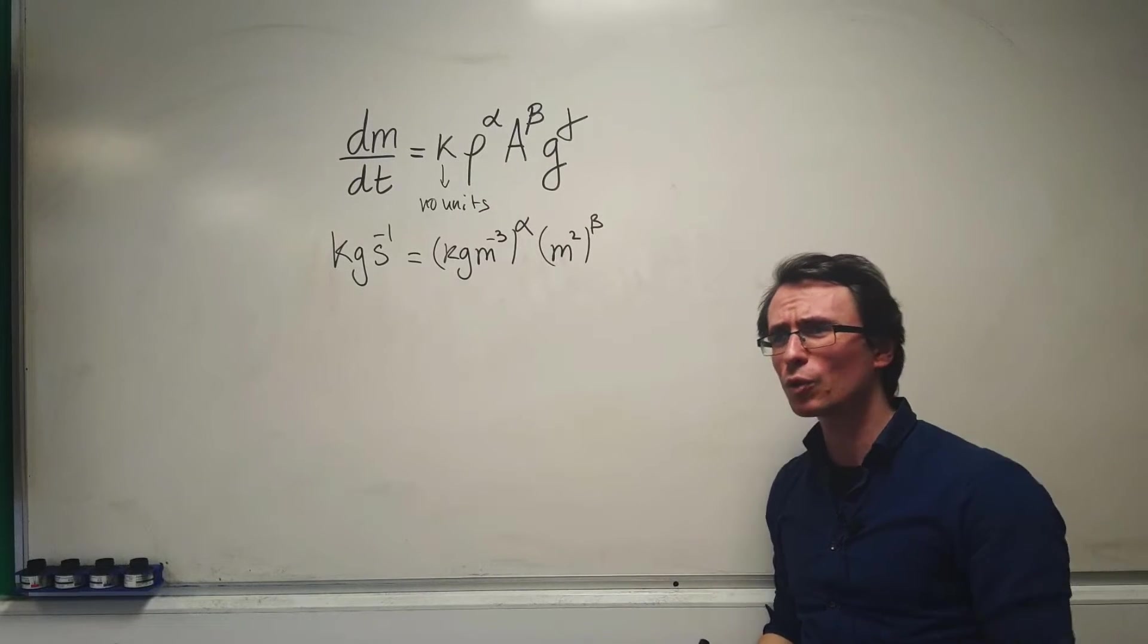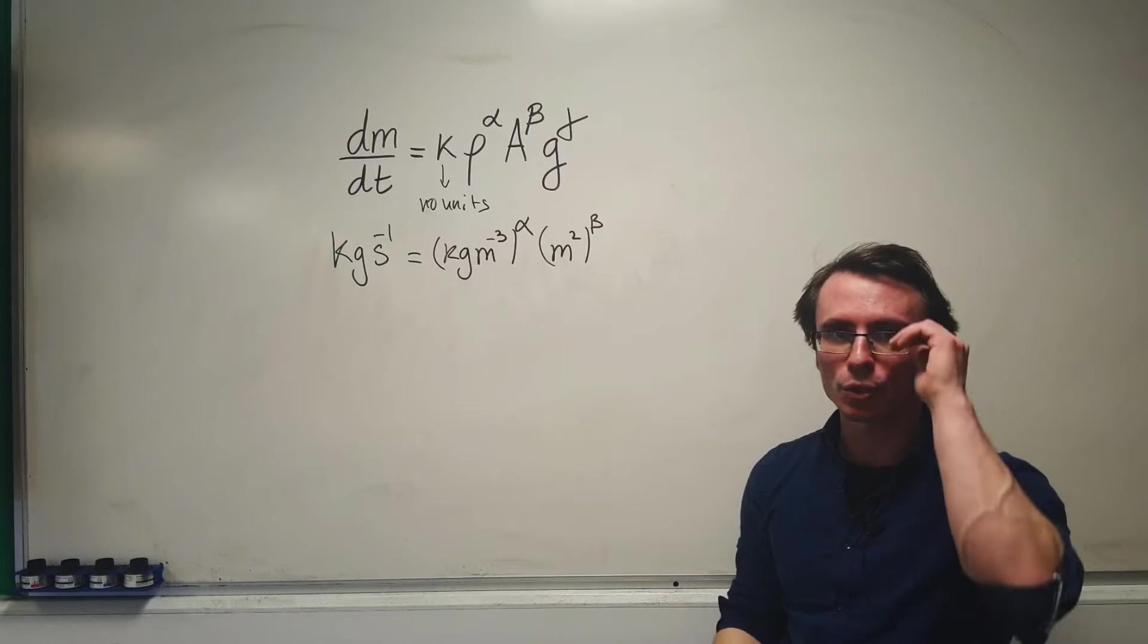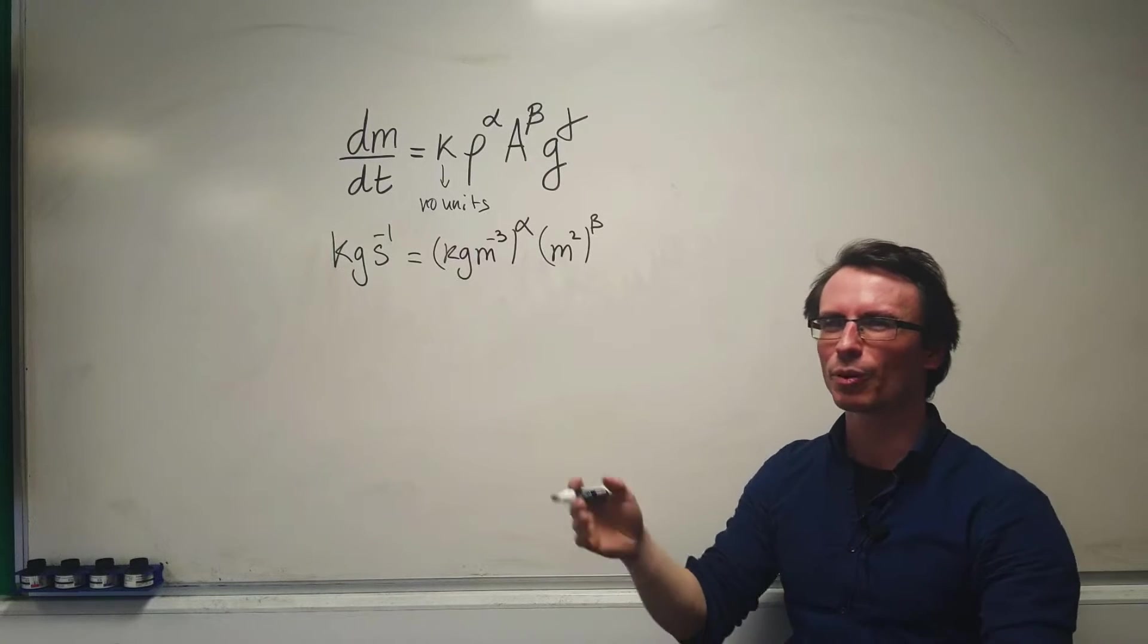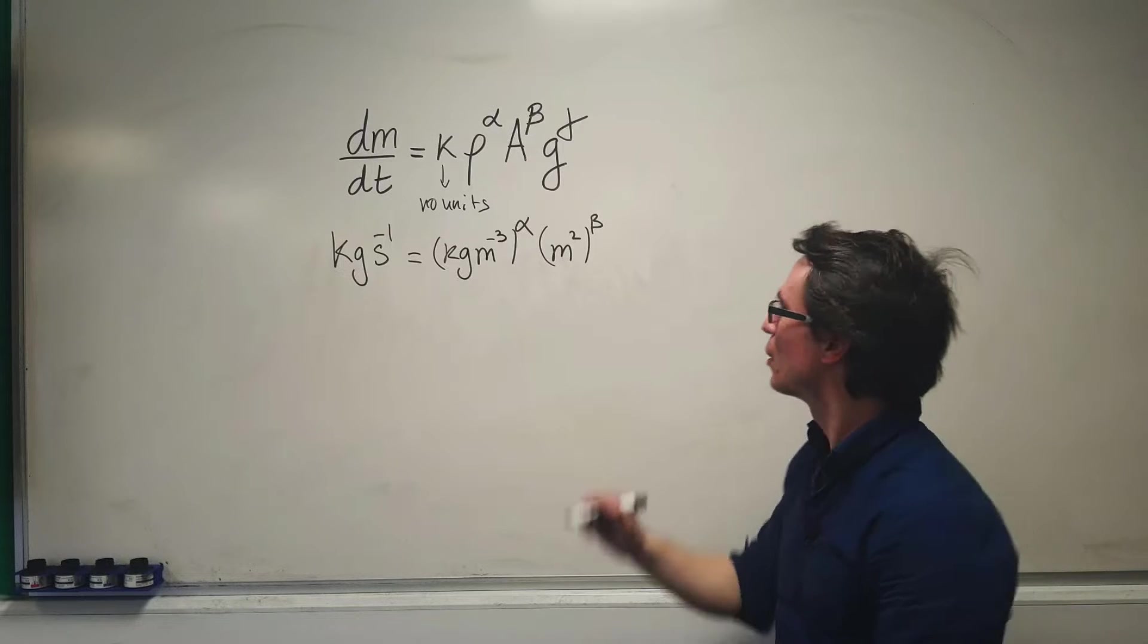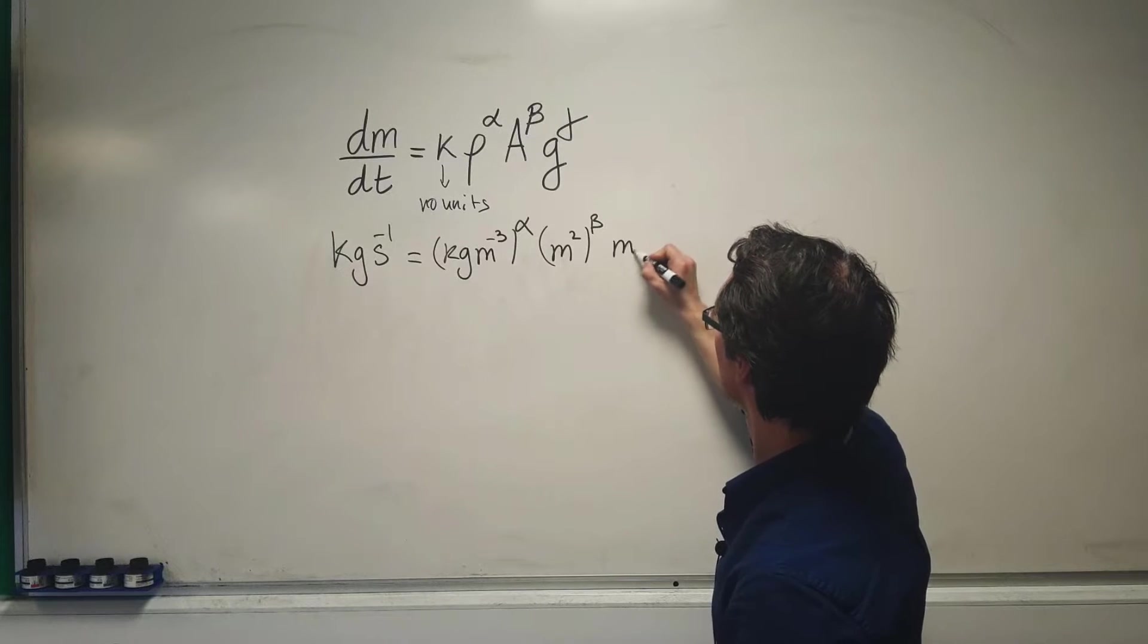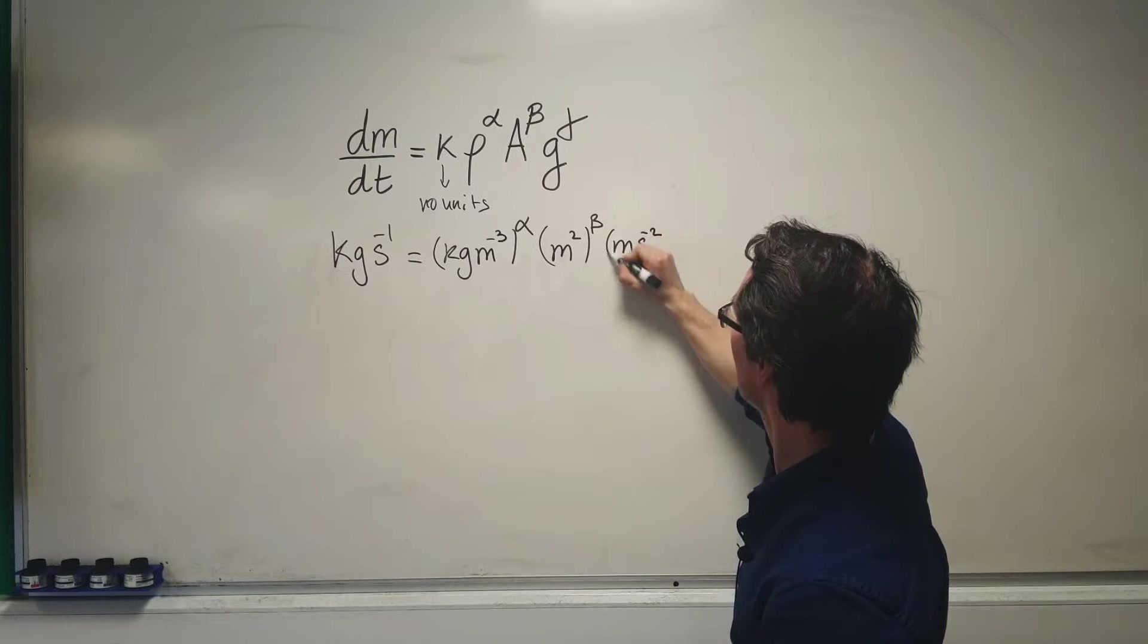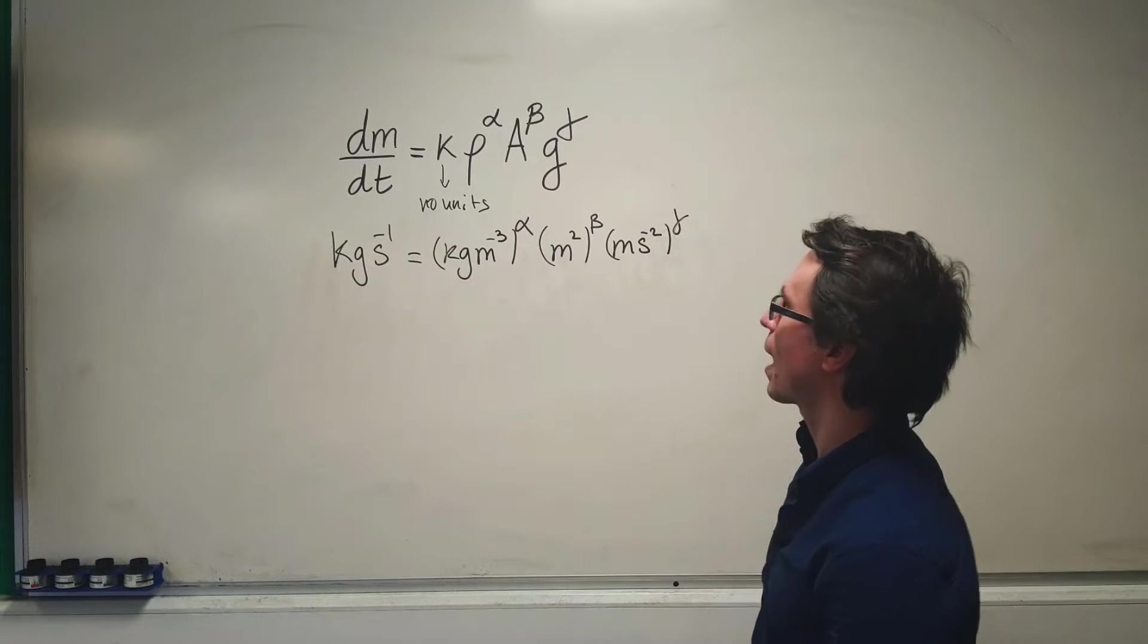G is gravitational field strength. For instance, Earth's average gravitational field strength is about 9.81 m/s². So this is m·s^(-2) raised to the power of gamma.